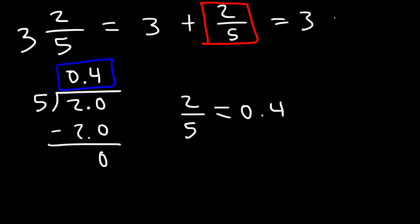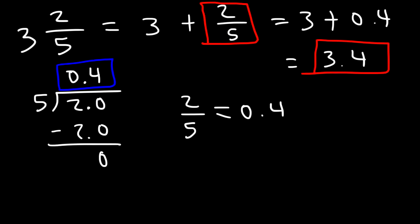So this is 3 plus 0.4 which is 3.4. And so that's how you can convert a mixed number into a decimal. But for the sake of practice let's go ahead and work on a few more examples.